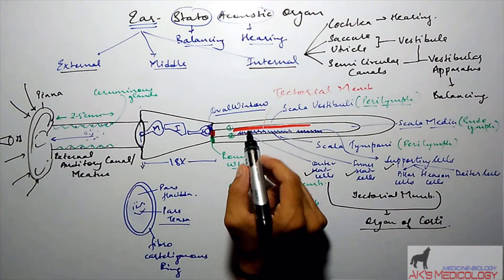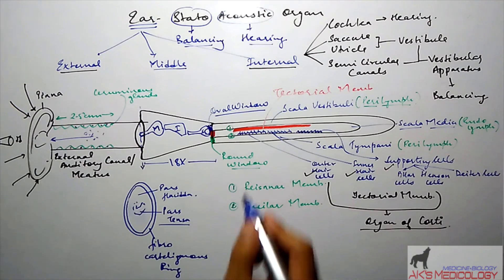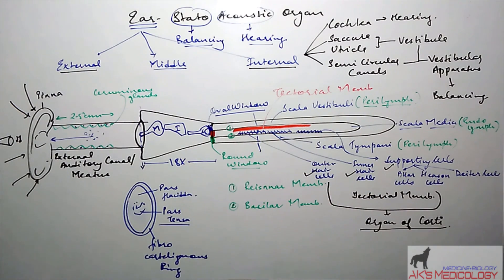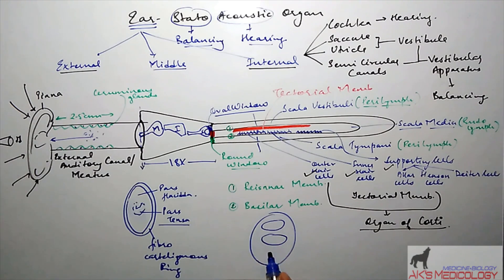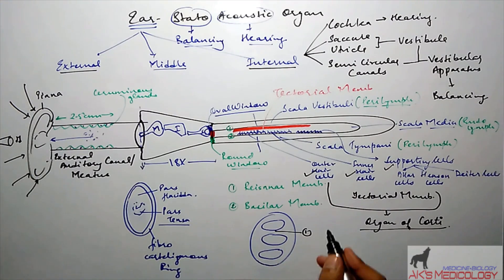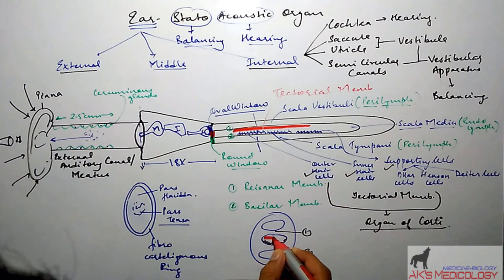Besides these structures, there is also a tunnel of Corti, which cannot be represented in a 2D diagram but is present within the scala media, formed by the outer and inner hair cells. In cross-sectional view, the cochlea shows the perilymph-filled scala vestibuli, the endolymph-filled scala media, and the perilymph-filled scala tympani. Reissner's membrane separates the scala vestibuli from the scala media, and the basilar membrane separates the scala media from the scala tympani. Above the hair cells lies the acellular tectorial membrane.